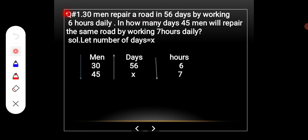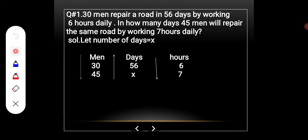Question No. 1: 30 men repair a road in 56 days by working 6 hours daily. In how many days will 45 men repair the same road by working 7 hours daily? There are three quantities given: men, days, and hours. Men: 30 to 45.